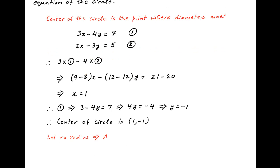Now let r be the radius of the desired circle. We are given that the area of the circle, which is equal to pi r squared, is equal to 49 pi, which implies that r is equal to 7.